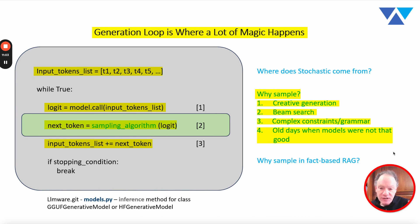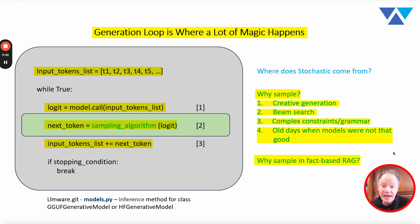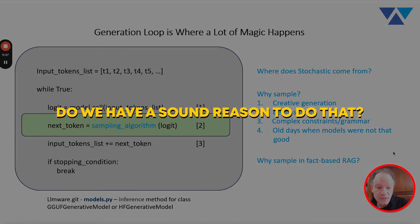But all of this begs perhaps a very simple question, which is why do we do this in a fact-based RAG? We are actually the ones introducing the random element into this generation process. Now, if we're doing this in conjunction with some sort of set of rules or a grammar, then there's clear logic for why we would be doing that. But otherwise, we're introducing this random element. If we're doing a greedy token by token process, we're the ones injecting a little bit of stochastic randomness into this. Why do we have a sound reason to do that?